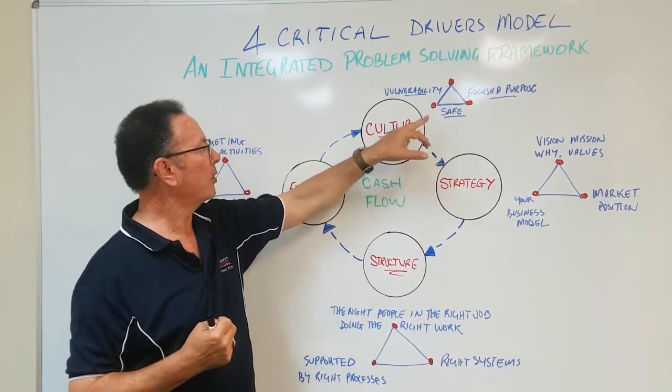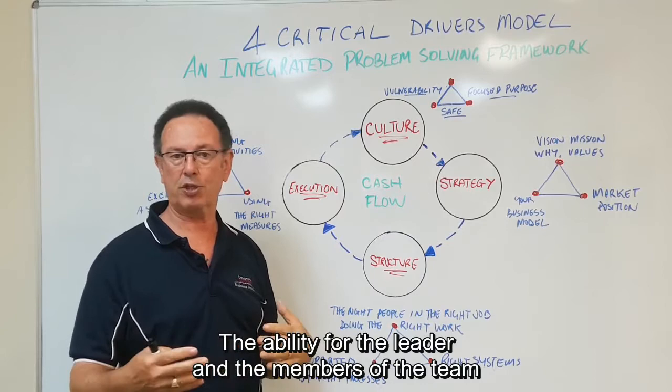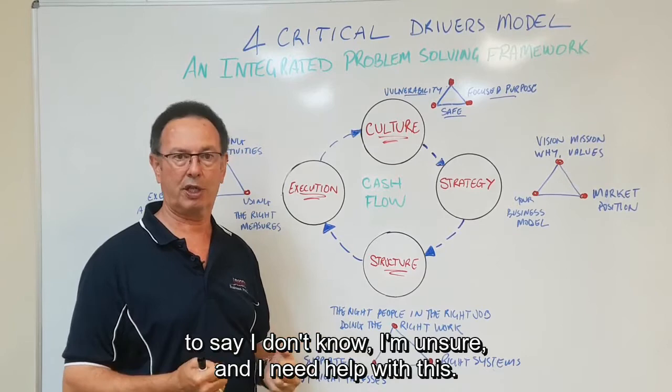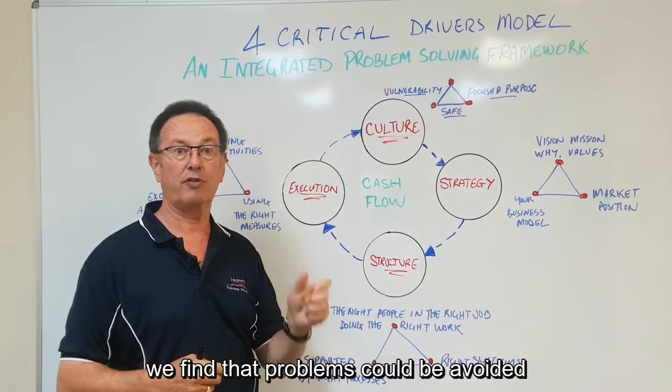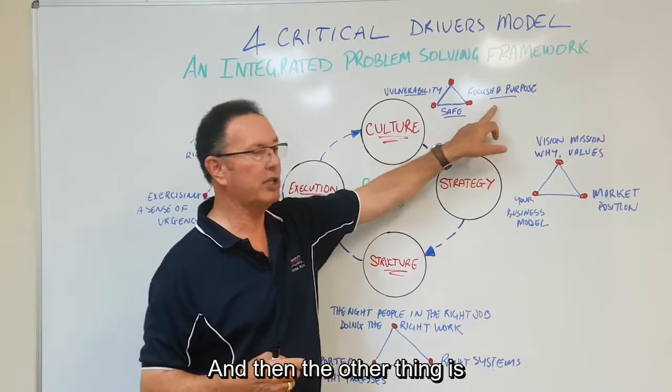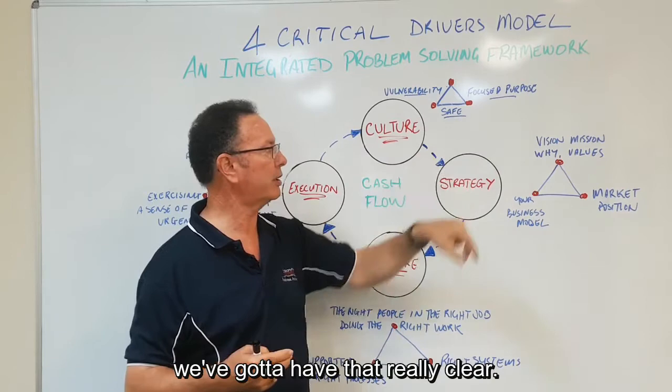Shared vulnerability. The ability for the leader and the members of the team to say, I don't know, I'm unsure and I need help with this. And that's a critical one. More often than not, we find that problems could be avoided if people were prepared to ask for help. So shared vulnerability is really critical. And then the other thing is we've got to be clear on what we're about. As a team, as an organization, we've got to have that really clear.